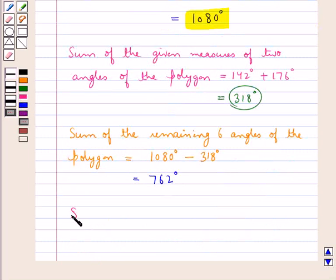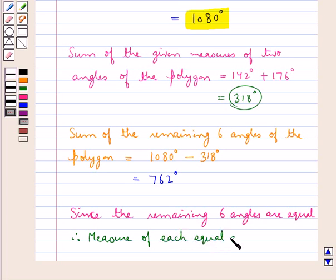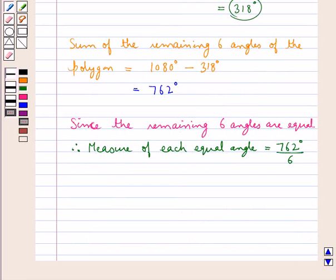Now, since the remaining six angles are equal, therefore the measure of each equal angle would be equal to 762 degrees divided by 6, and this comes out to be equal to 127 degrees. That is, the measure of each equal angle is equal to 127 degrees.